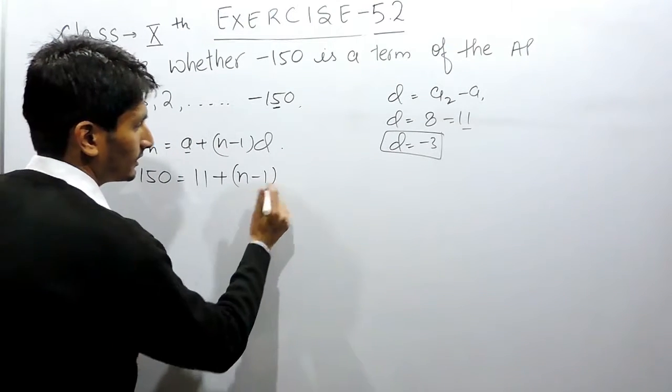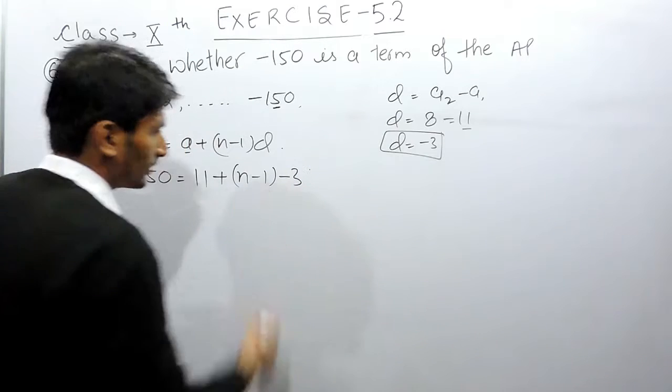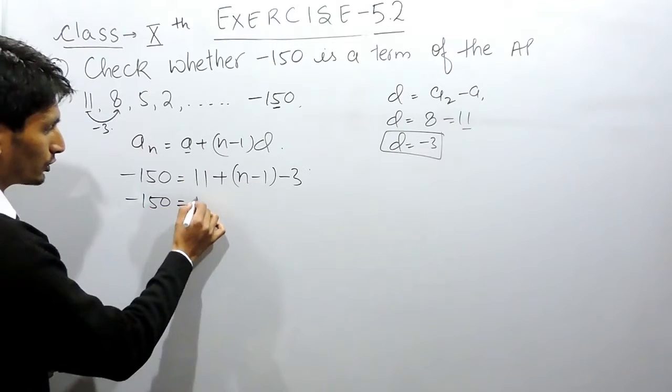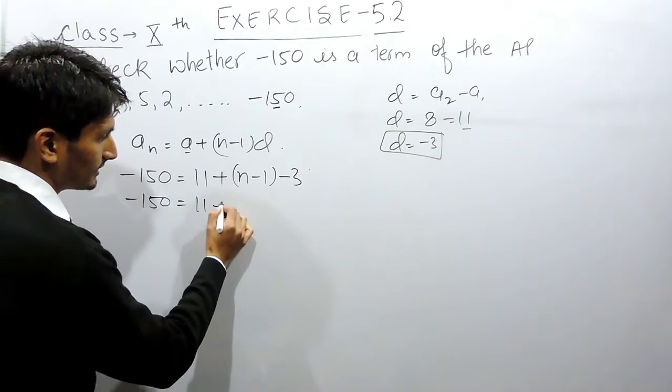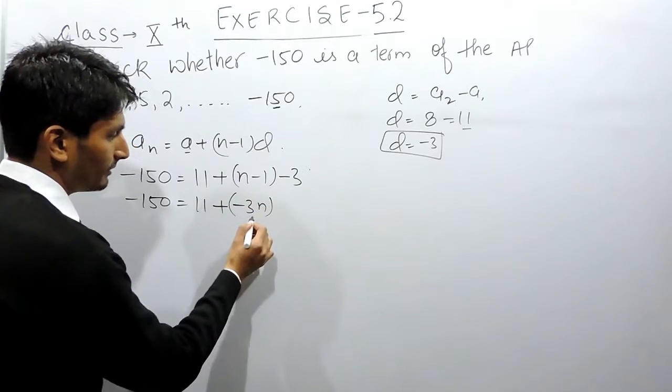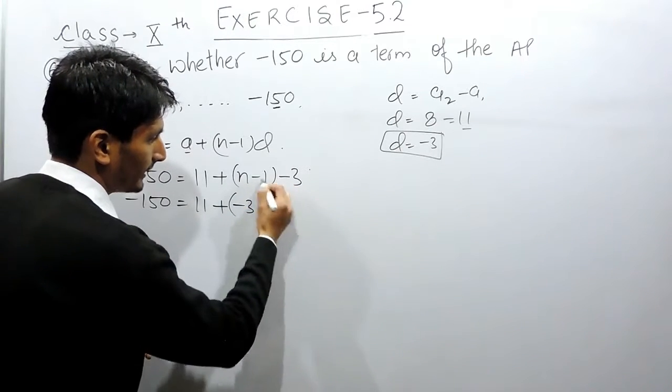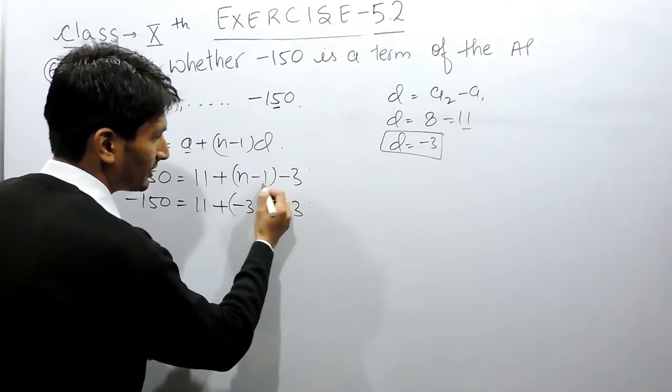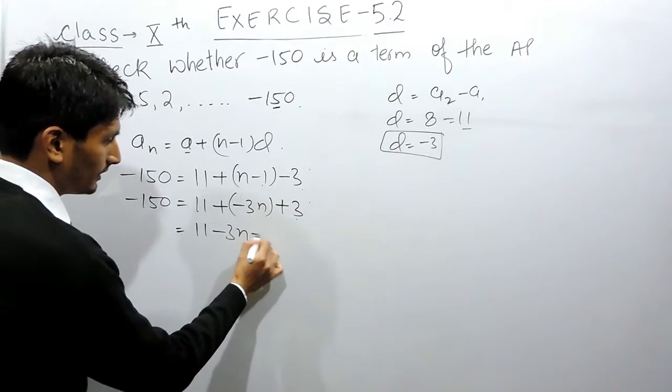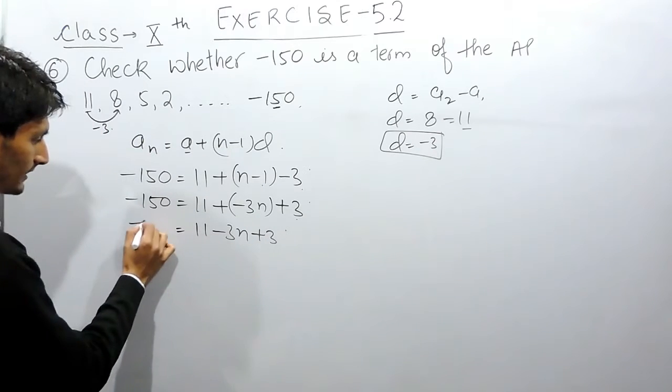So I can substitute the value of d as minus 3. So this is -150 equals to 11, and this is minus 3 multiplied by n, which will be -3n. And minus times minus will be plus, and 3 multiplied by 1 will be 3. So this is 3n plus 3, and this is -150.